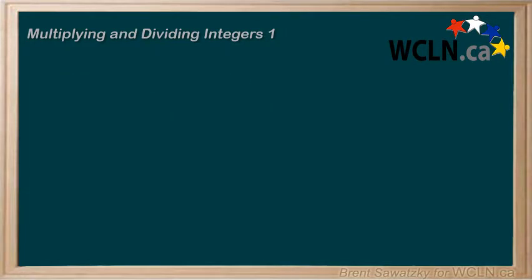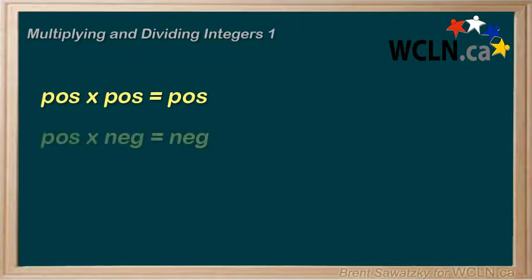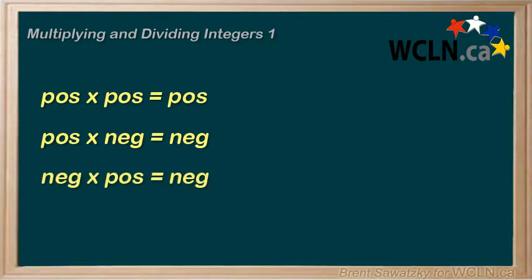At this point, we've established that two positives being multiplied gives a positive. A positive times a negative results in a negative. And switched around, a negative times a positive would also result in a negative. So just one more scenario left — what would be the result of multiplying two negatives?